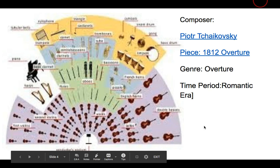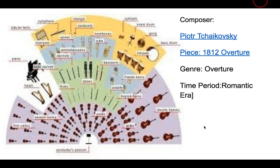Lastly we're going to look at the romantic orchestra by listening to a piece called the 1812 Overture by Pyotr Tchaikovsky. An overture is a grandiose or very embellished introduction to a larger work, meaning a whole concert or a whole play can have an overture. We're going to listen to the end of this overture. The 1812 Overture is one of his most famous pieces for the added effects at the end of the song, so I urge you to listen to the whole piece.